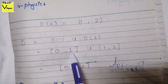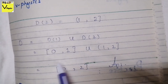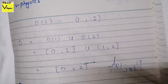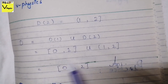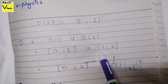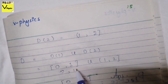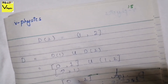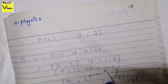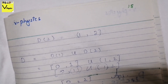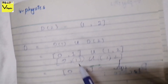Looking at this union: [0, 1] ends at 1 (included), and (1, 2] starts just after 1. Since 1 is included in the first piece and not in the second, but we are taking the union, 1 is included overall. So we can combine these into [0, 2]: 0 is included (closed bracket) and 2 is included (closed bracket). Alternatively written as [0, 1] ∪ (1, 2] — in either form, the combined domain is effectively [0, 2].